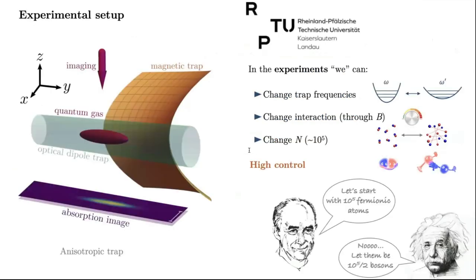This is the scheme of the experimental setup. We have a magnetic and optical trap giving a total anisotropic harmonic trap. The gas is this red cloud here. And, in the experiments, we can change the trap frequencies, that means we can open or compress the trap. We can change the interparticle interaction by changing the magnetic fields, that means we can break or rebuild the molecules. And, we can also change the number of particles. And, all of these variables we can change with a very fine control.